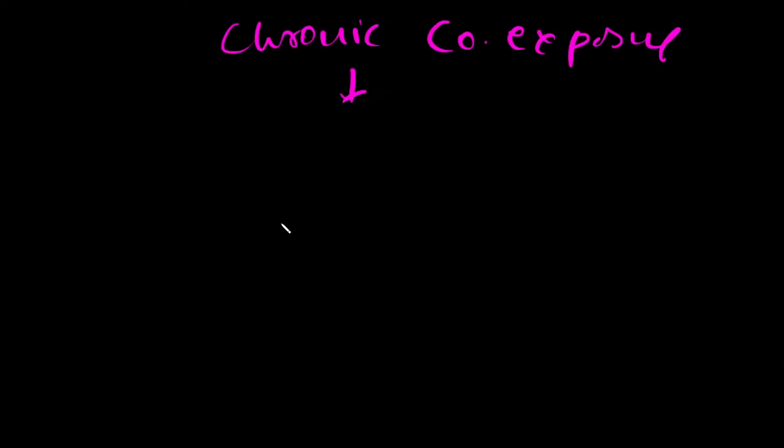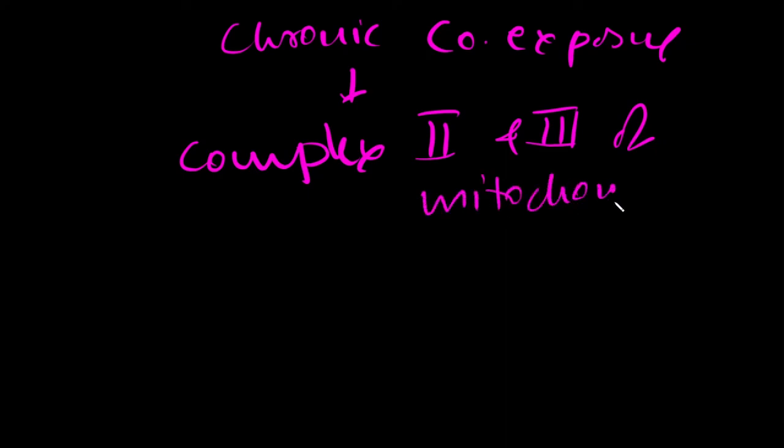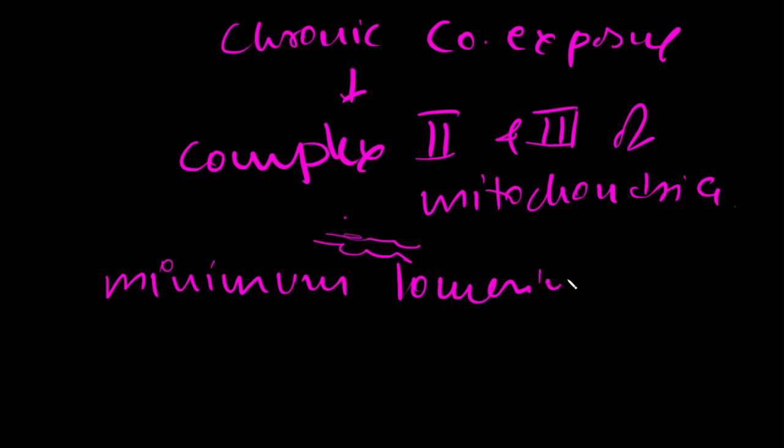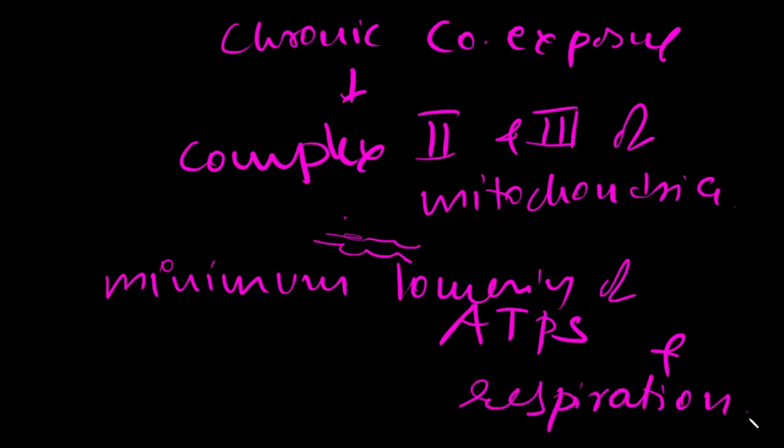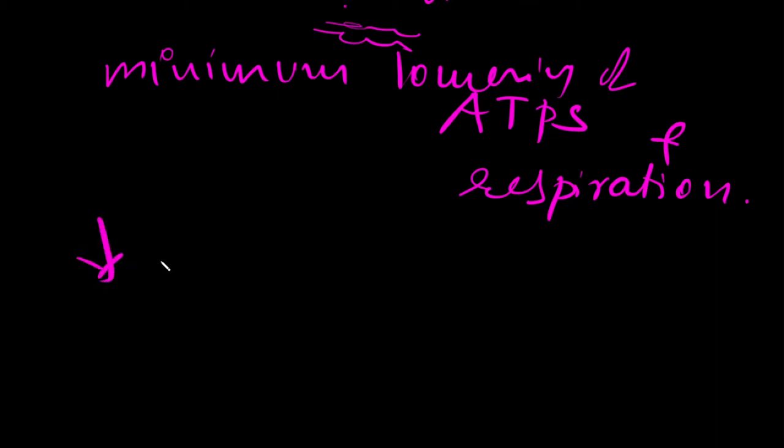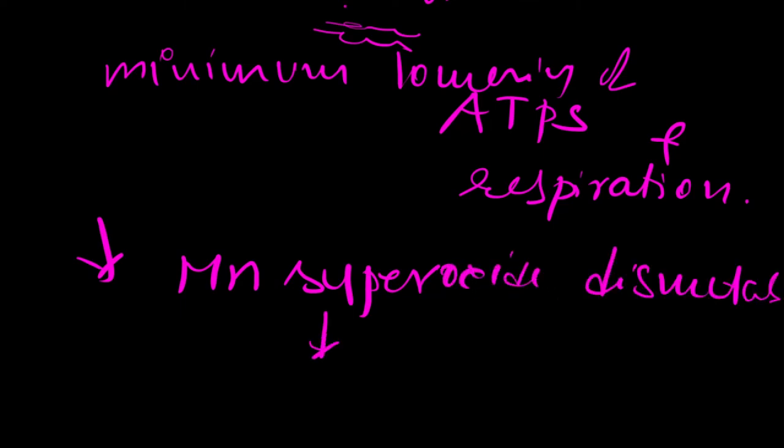Chronic cobalt exposure targets mitochondrial enzymes in complex 2 and 3, with some effects on minimal lowering of ATP and mitochondrial respiration. Cobalt was also found to decrease mitochondrial manganese superoxide dismutase, which leads to oxidative myocardial damage.